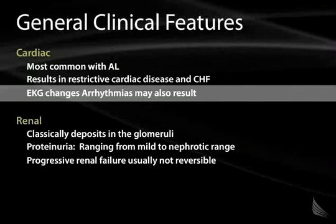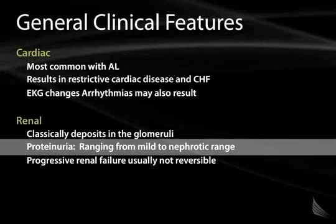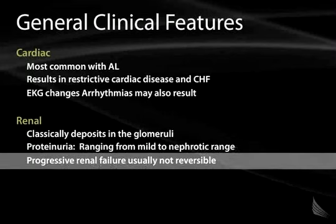The kidney is also commonly affected in different forms of amyloidosis. The area within the kidney that is affected is the cortex, where one sees deposition of amyloid within the glomeruli. Urinalysis on these patients reveals proteinuria, which can range from very mild to levels consistent with the diagnosis of nephrotic syndrome. Unfortunately, this deposition of amyloid leads to progressive renal failure that is not easily reversible.